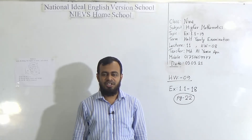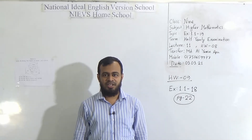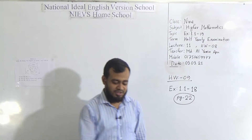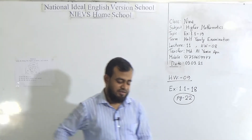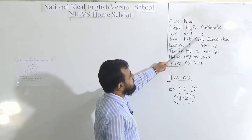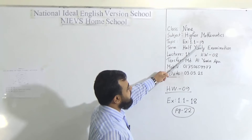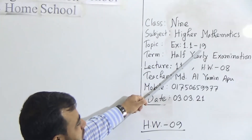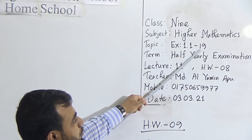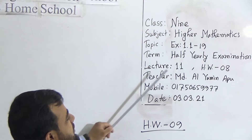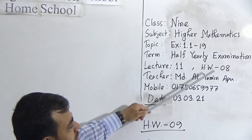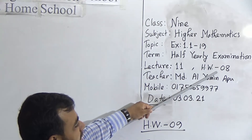Today I'm going to take a higher mathematics class for students of class 9. Our today's topic is Exercise 1.1, question number 19 — that means only one question we will solve today, from your book page number 22. This is lecture number 11, and your homework number is 8.